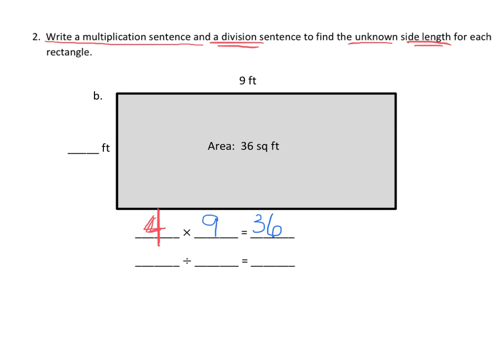Now, division. What we could have done for the division is we would write 36, because that's the area, divide by 9, because that's the side length we do know. And then the answer is 4, because that's the missing side length over here.